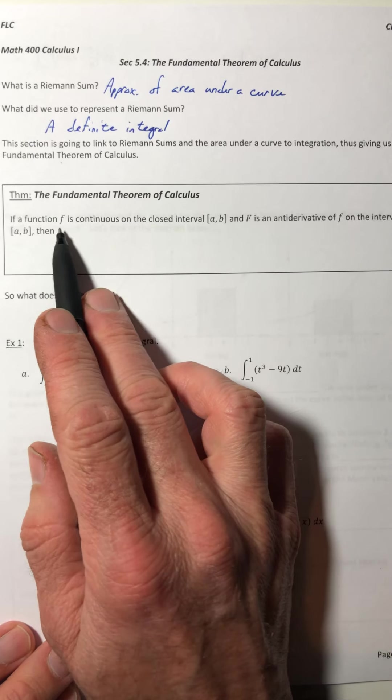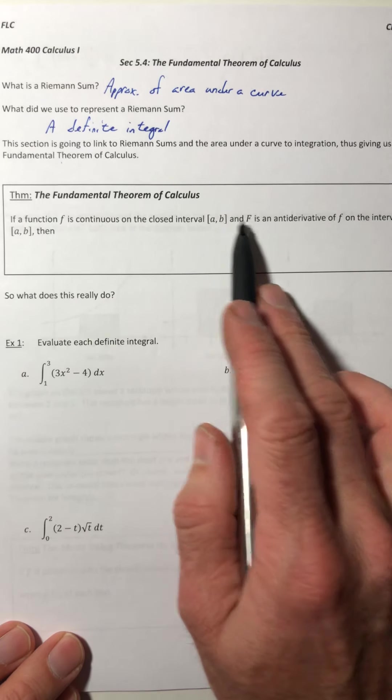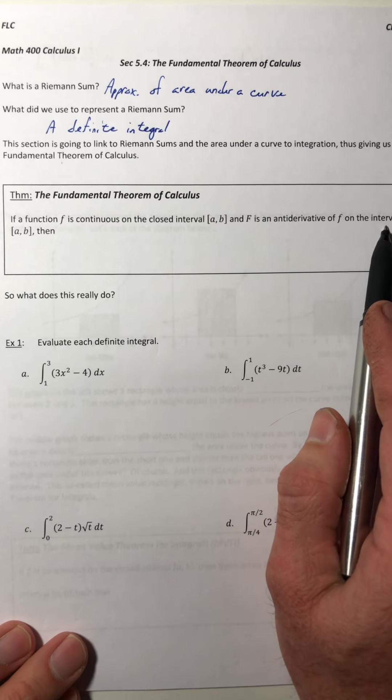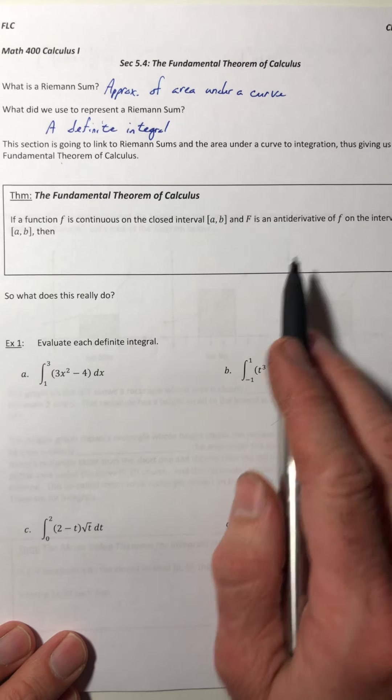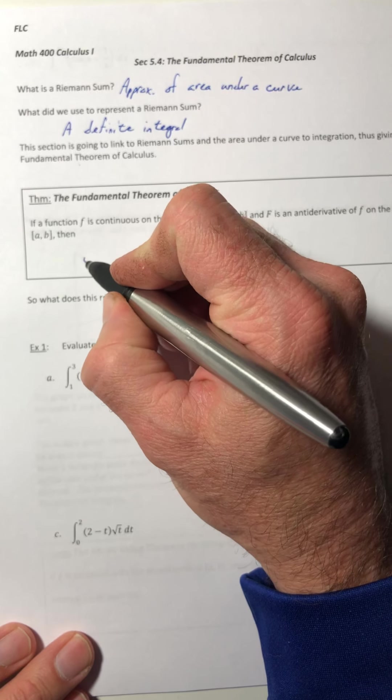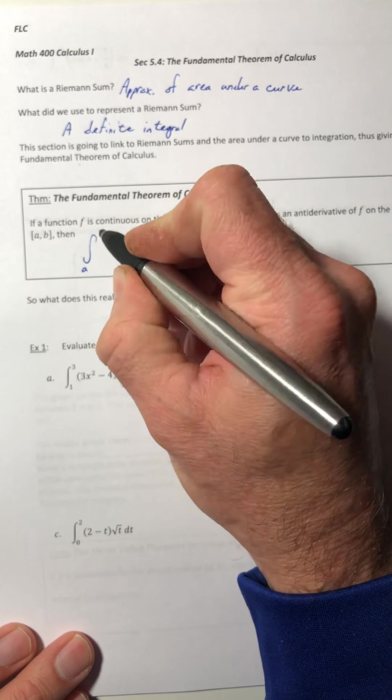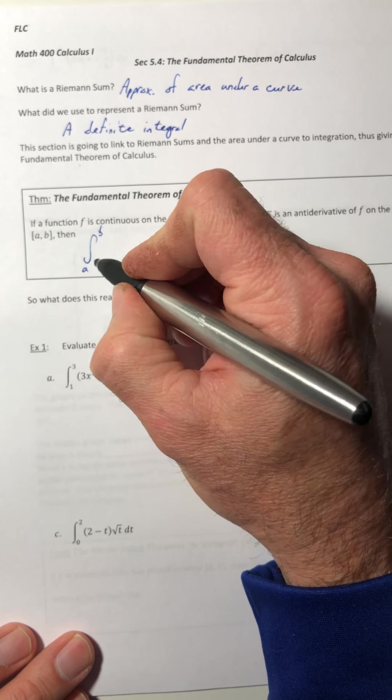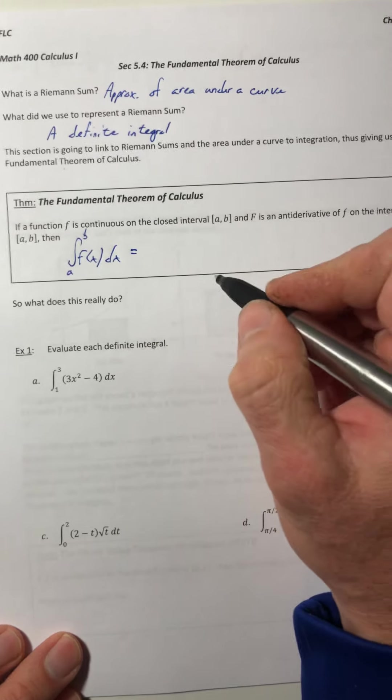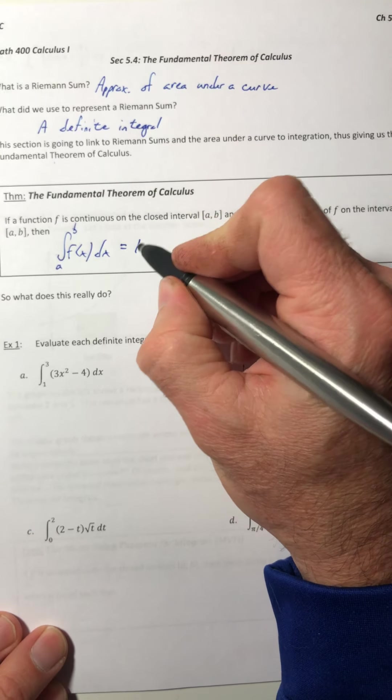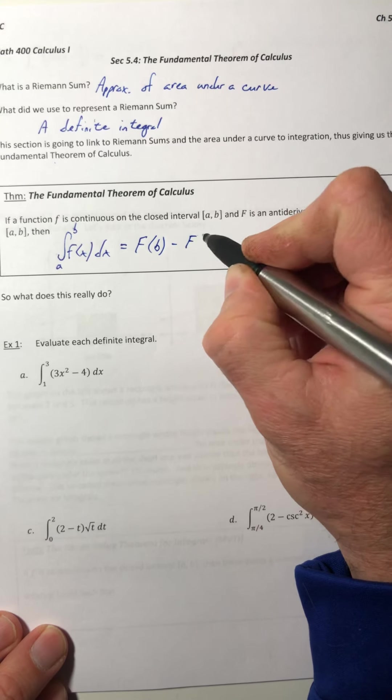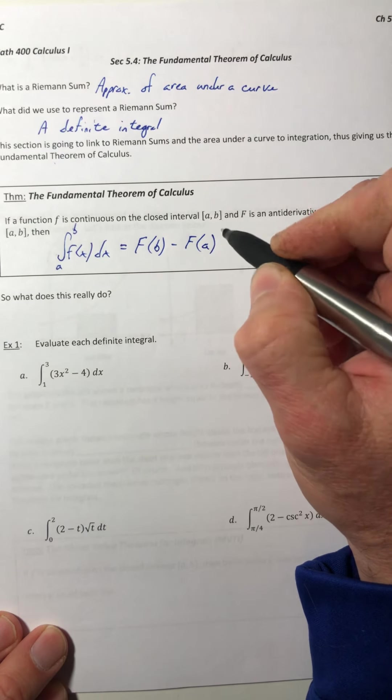So let's see what it is. If a function f is continuous on that interval, and capital F is an antiderivative of little f, we're going back to antiderivatives, then the definite integral from a to b of f(x)dx is going to equal capital F(b) minus capital F(a).